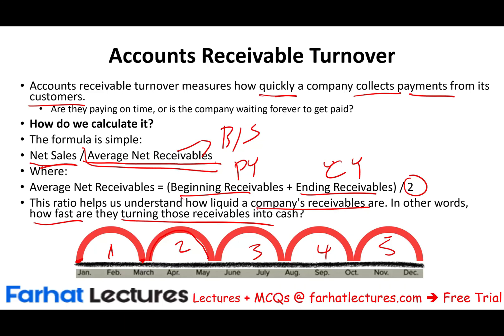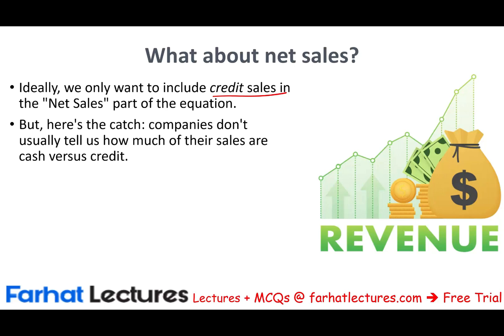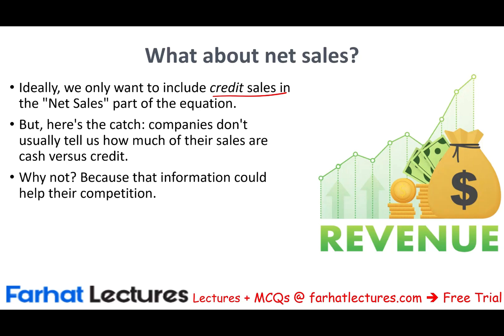The numerator is sales. Ideally, we would only include credit sales, because cash sales should not be counted — you're getting the cash immediately. However, companies usually don't break down their sales into credit versus cash because they're not required to, and that information could be helpful to competitors. So in the real world, when computing this ratio for a publicly traded company, it's less meaningful if they have both cash and credit sales.